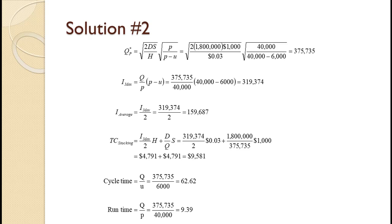Plugging in the values gives us an optimal order quantity of 375,735. The maximum inventory is 319,374 with an average inventory of 159,687. The total annual stocking cost is $9,581. An order lasts almost 63 days and takes a little over nine days to produce.